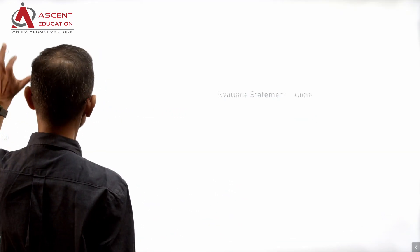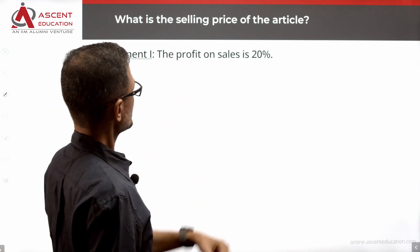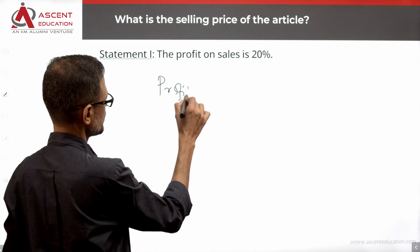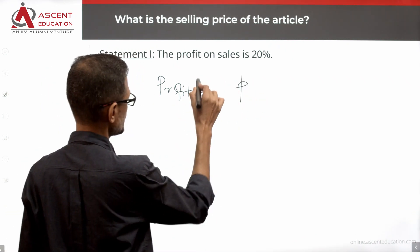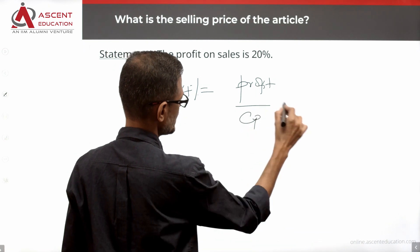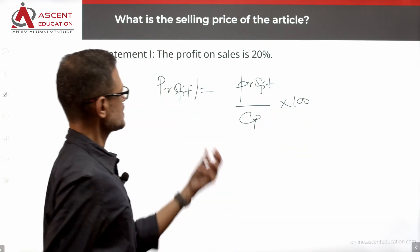Statement 1: The profit on sales is 20%. Profit percentage is profit divided by cost price into 100. This is equal to 20.